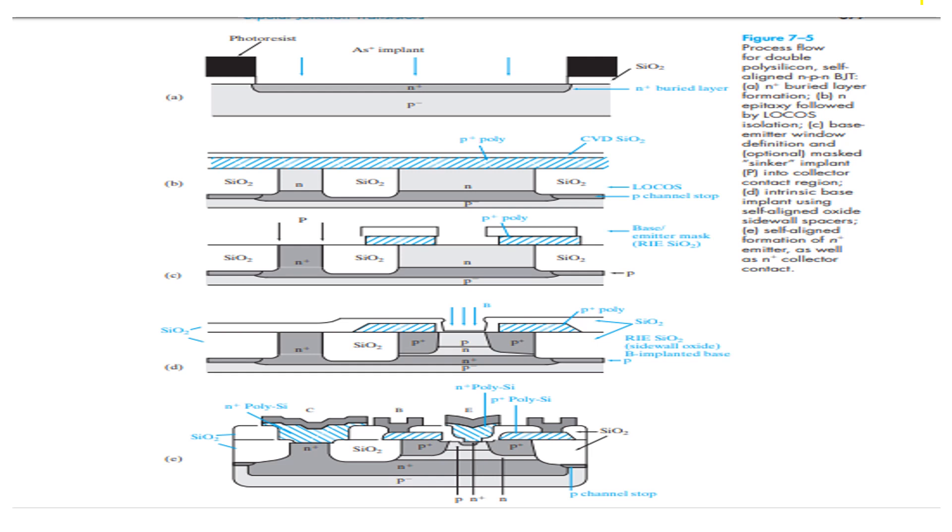Then, as we have discussed in previous 2-3 slides, then come their base emitter window definition and optional N plus sinker implant. So, a polysilicon layer is deposited by low pressure chemical vapor deposition and doped heavily with P-type material using boron during deposition or subsequently by ion implantation. Then, an oxide layer is deposited next by LPCVD. Using photolithography with base emitter mask, a window is etched in the polysilicon oxide stack by reactive ion etching.